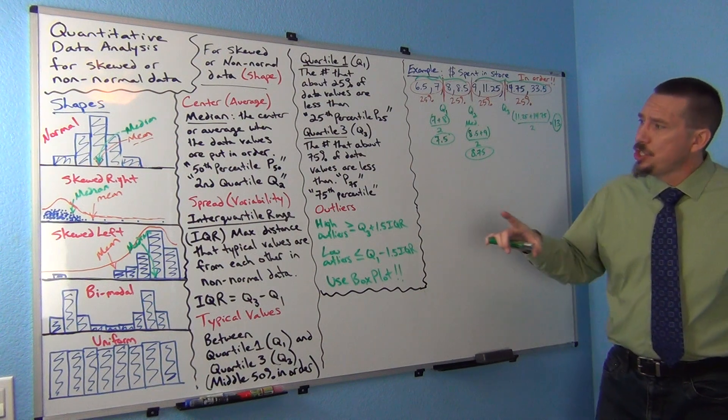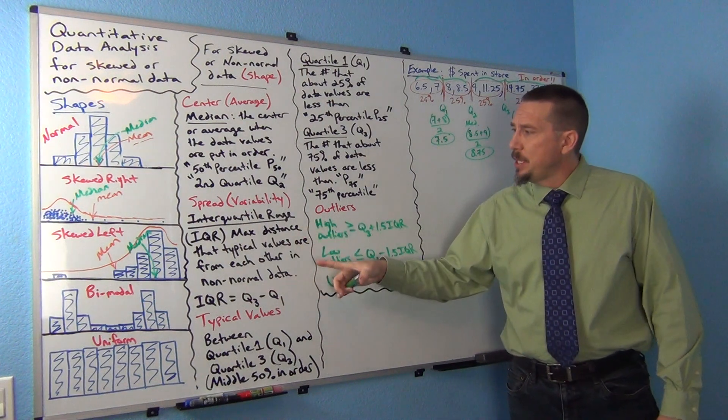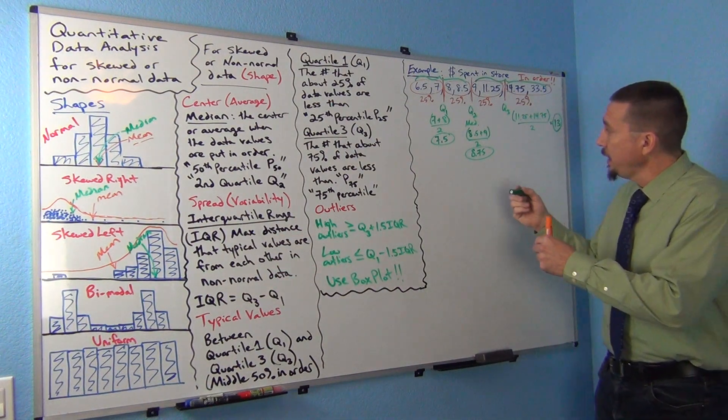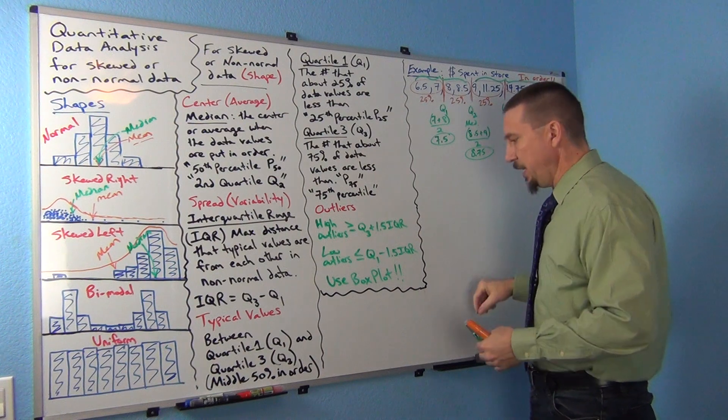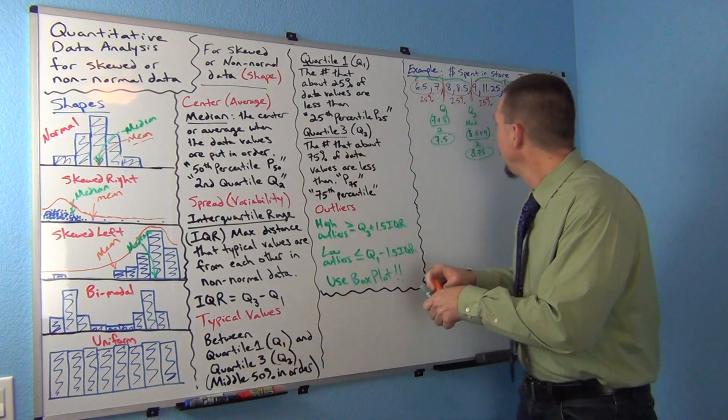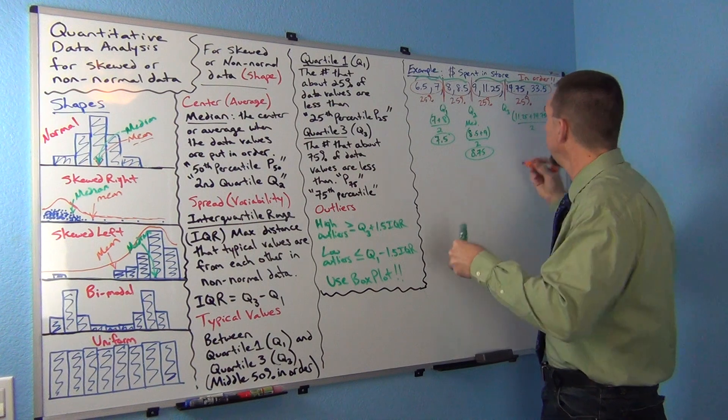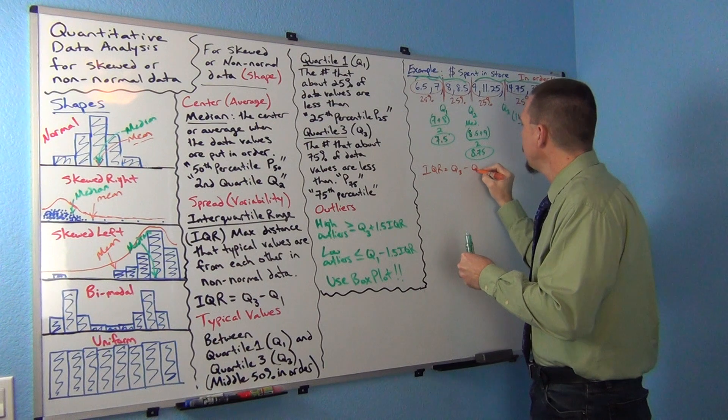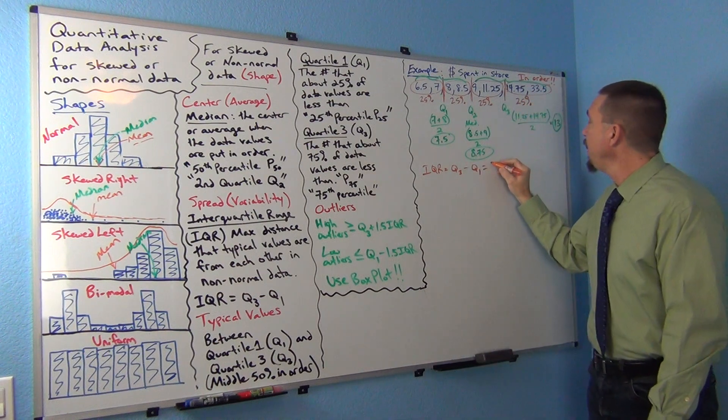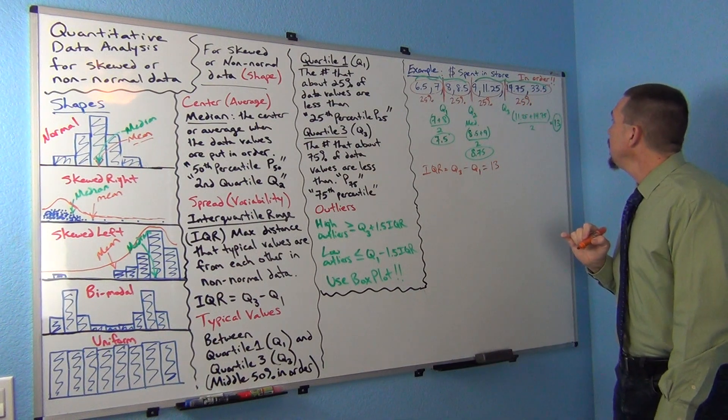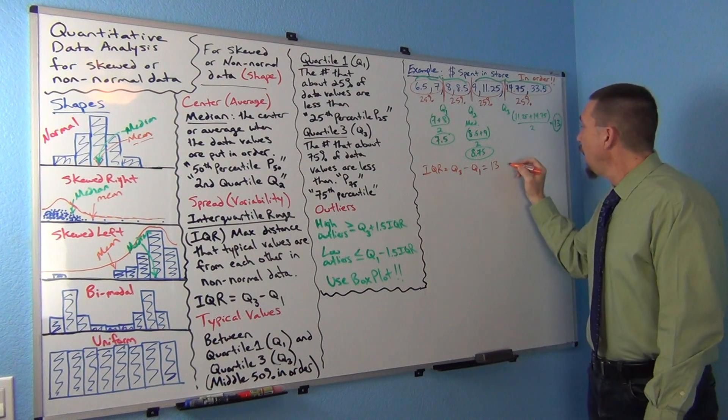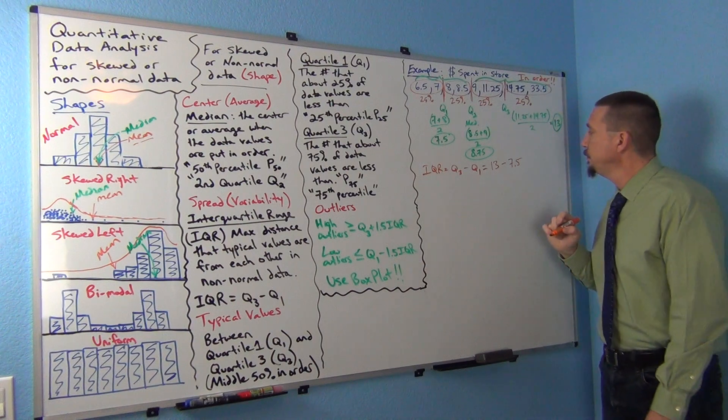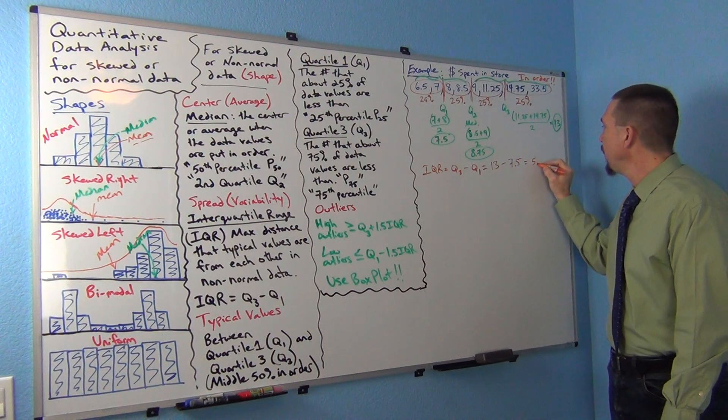We said that the spread was IQR. Let's see if we can work that out. IQR was quartile three minus quartile one. In our case, that would be 13 minus 7.5, which would be 5.5.